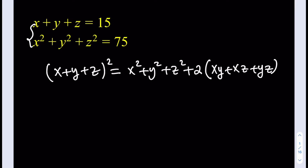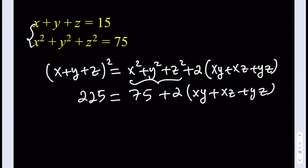Okay, let's see. Now, we have the sum as 15. So this is going to be 225. And as you know, the sum of the squares is given as 75. From here, we can actually solve for xy plus xz plus yz. So subtract the 75 from the 225. That's going to be 150.